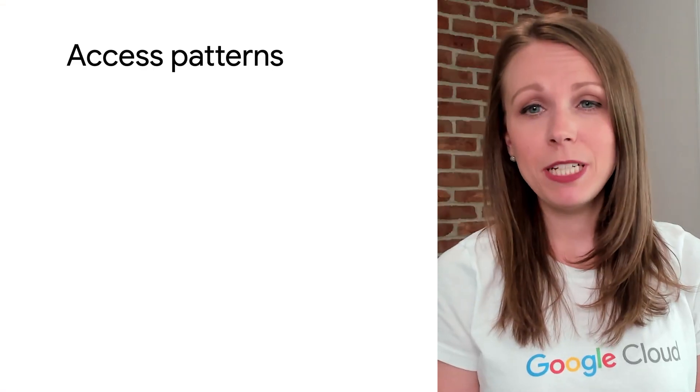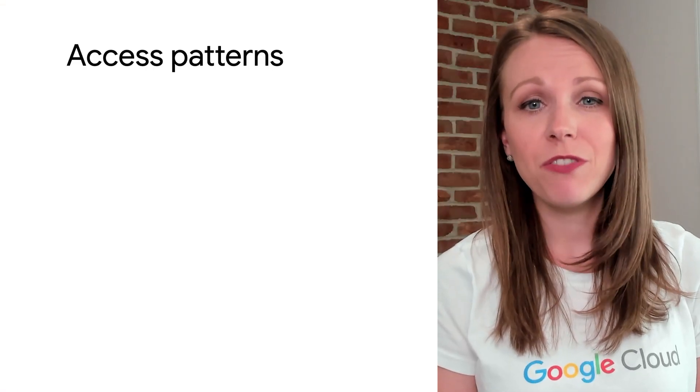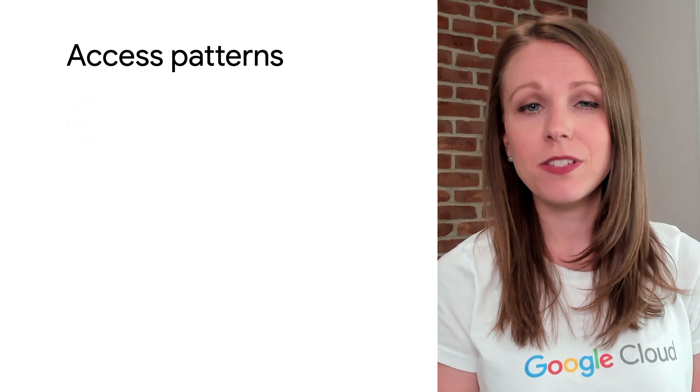Cloud SQL can be deployed with two different access patterns: public IP and private IP. A public IP is an IPv4 address that can receive connections from devices both inside and outside of Google's network, including from locations like your home or office.